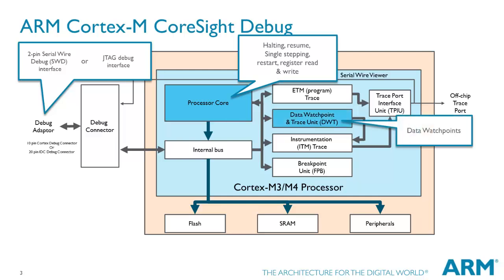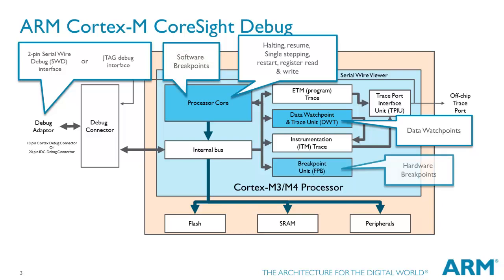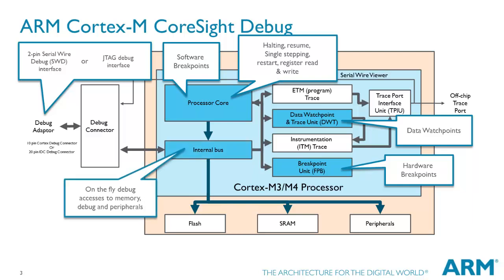Data watchpoints allow for an event at a particular address to be highlighted without actually stopping the process core. Software and hardware breakpoints allow for execution halt when a specific address is encountered. On the fly, debug access to memory and peripherals is another important feature. Flash programming is also key for flexible and fast core development for modern microcontroller-based systems.